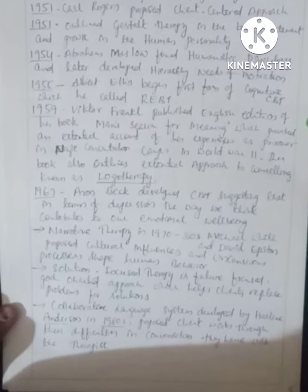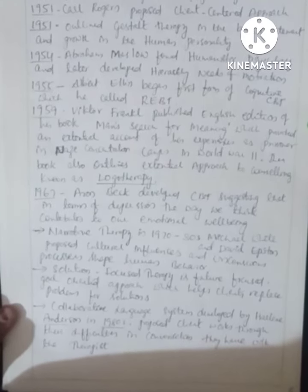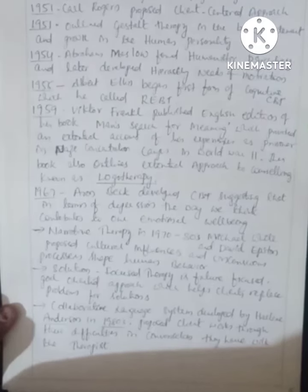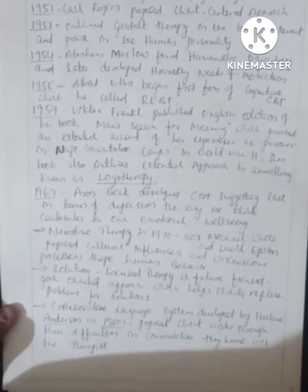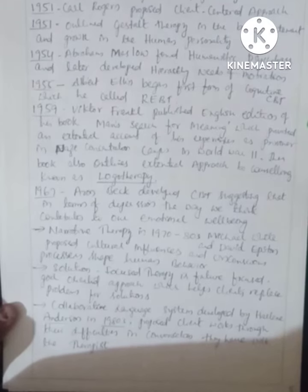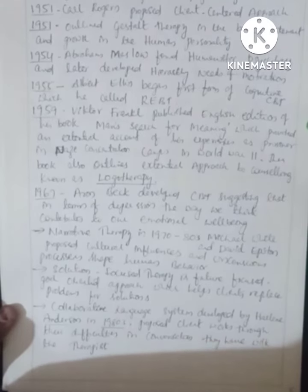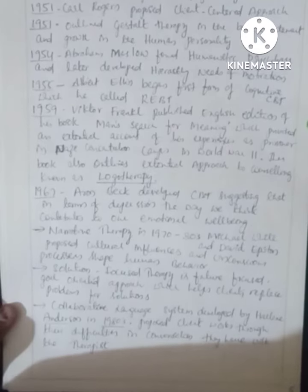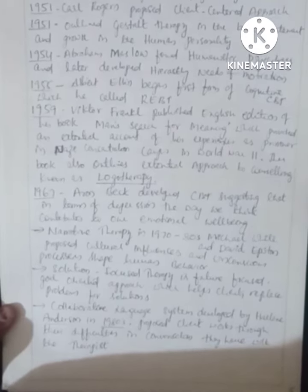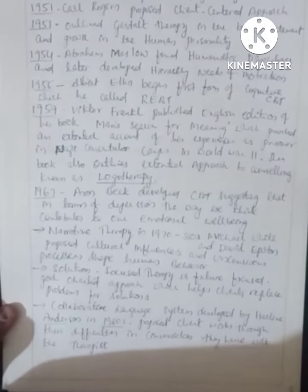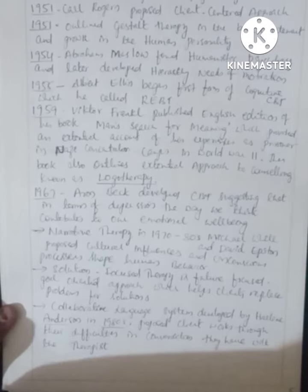In 1954, Abraham Maslow founded humanistic psychology and later developed the hierarchy of needs of motivation. In 1955, Albert Ellis began the first form of cognitive therapy. In 1959, Victor Frankl published the English edition of his book, Man's Search for Meaning.